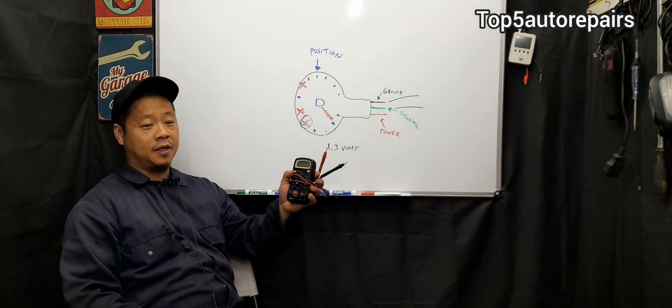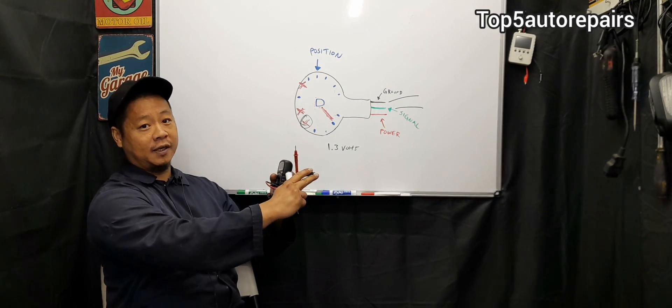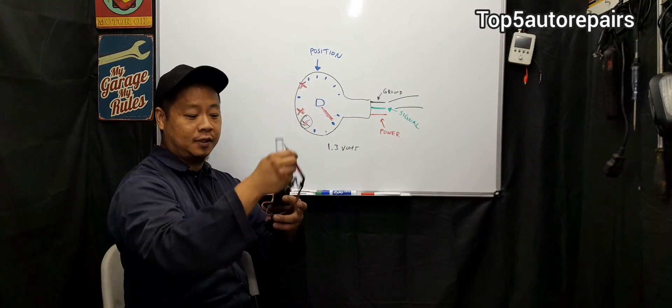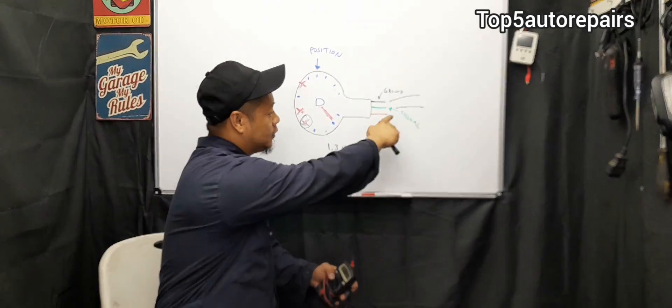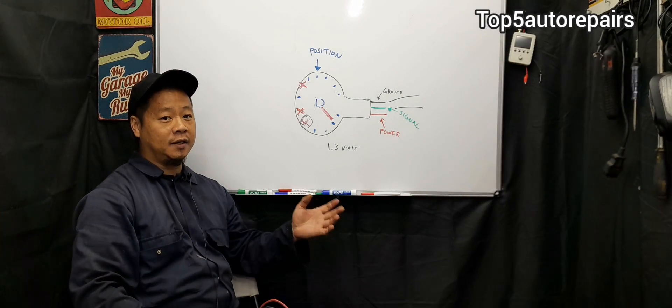To test the TPS, you want to set to voltage, and you want to have this negative lead connected to the ground of the TPS sensor, and this positive lead to the signal wire. And you want to have your engine running at idle.